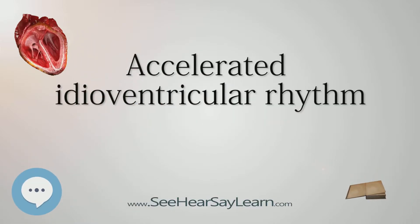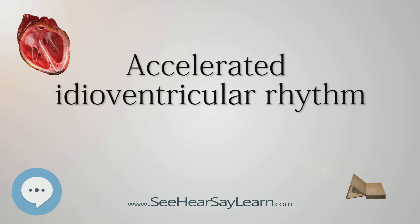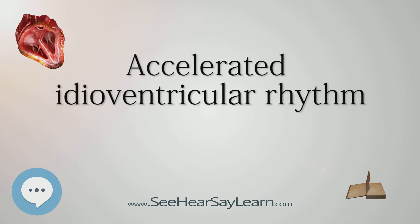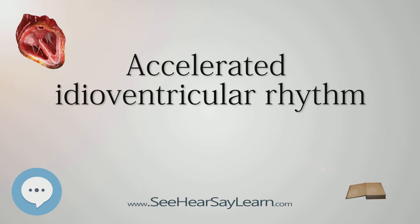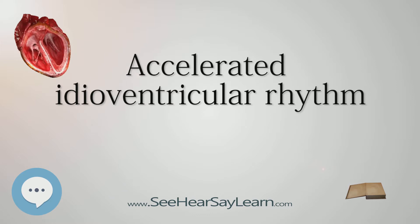Accelerated Idioventricular Rhythm is a ventricular rhythm with a rate of between 40 and 120 beats per minute. Idioventricular means relating to or affecting the cardiac ventricle alone and refers to any ectopic ventricular arrhythmia. Accelerated Idioventricular Arrhythmias are distinguished from ventricular rhythms with rates less than 40 (ventricular escape) and those faster than 120 (ventricular tachycardia), though some references limit the range to between 60 and 100 beats per minute. It is also referred to as AIVR and slow ventricular tachycardia.